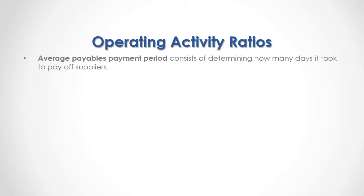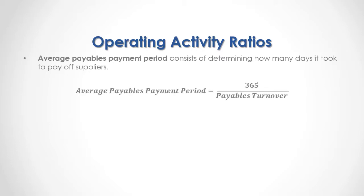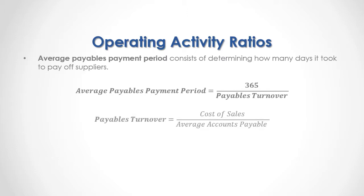Average payables payment period consists of determining how many days it took to pay off suppliers. As a formula, the average payables payment period is equal to 365 days divided by the payables turnover. Payables turnover is equal to the cost of sales divided by the average accounts payable.